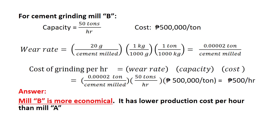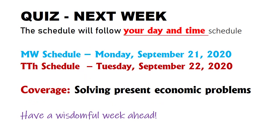For cement grinding mill B: capacity is 50 tons per hour and cost is 500,000 pesos per ton. The wear rate of 20 grams per ton cement milled converts to 0.00002 ton per ton cement milled. The cost of grinding per hour is 0.00002 times 50 times 500,000, which gives 500 pesos per hour. Therefore, mill B is more economical because it has a lower production cost per hour than mill A.